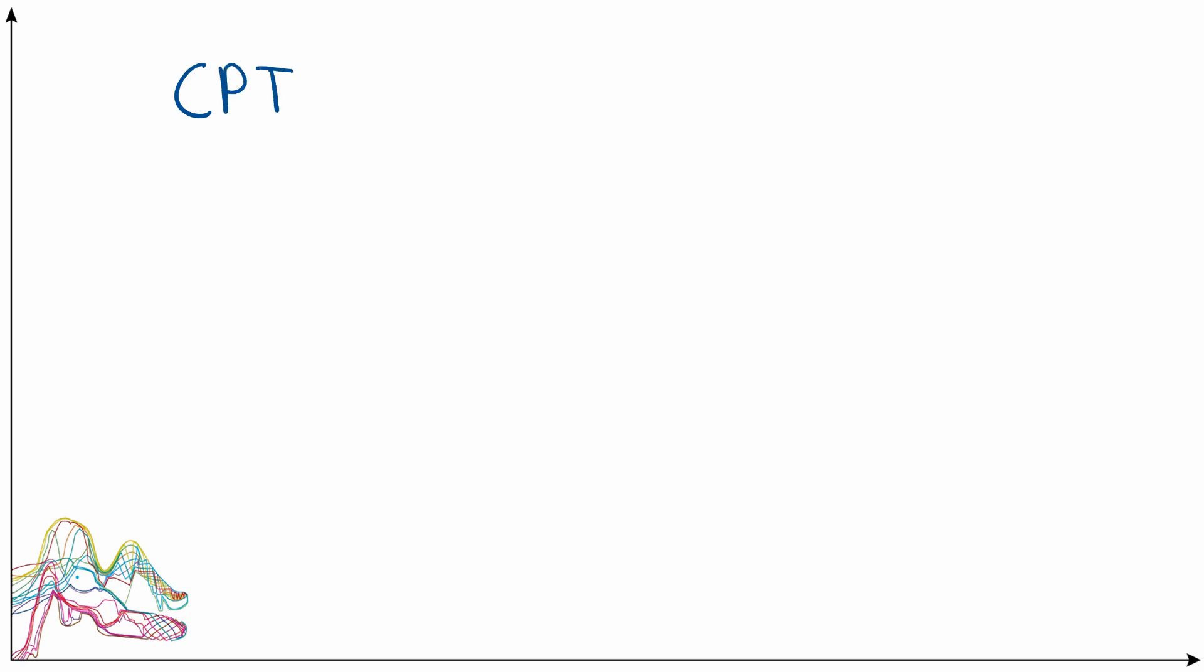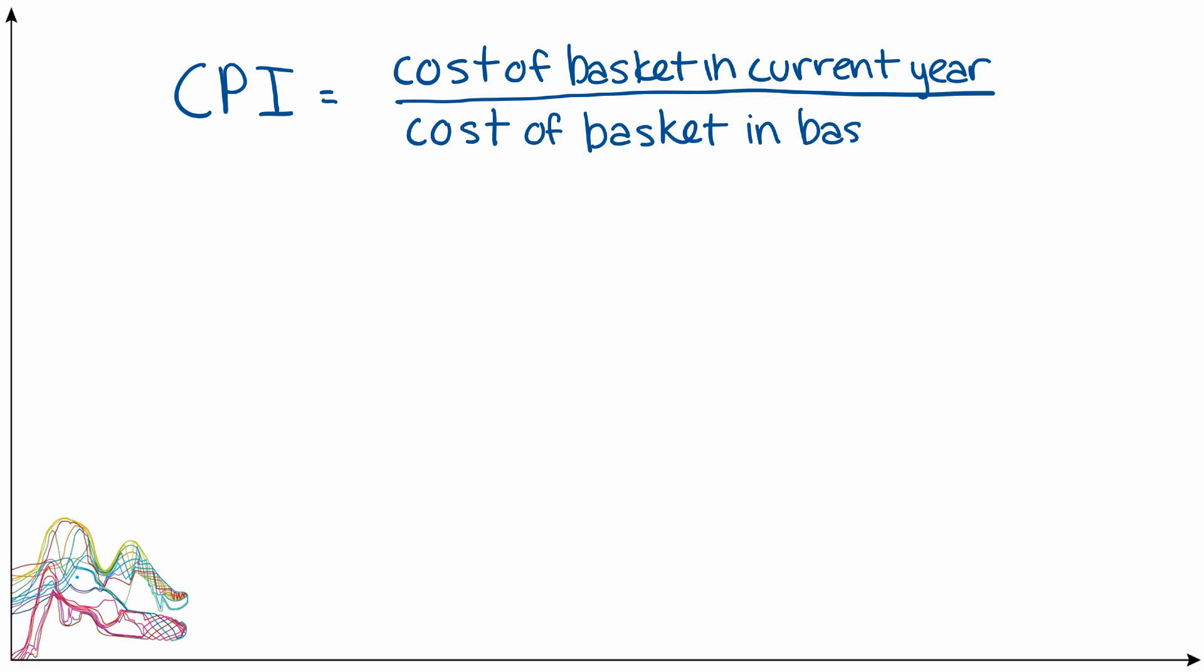We could also measure the price level in an economy via what's known as the consumer price index. The consumer price index takes a basket of goods and services that the representative households in an economy would consume, and then takes the cost of that basket in the current year, using current prices, and divides that by the cost of the basket in what's defined as a base year, then multiplies by 100. Because the cost of the basket of goods and services is dependent on the prices of the items in that basket, the consumer price index, as its name would suggest, gives us a measure of an average or aggregate price level in the economy.